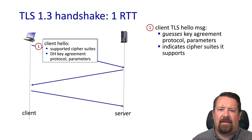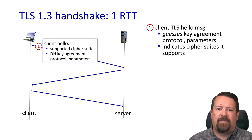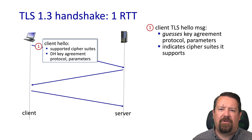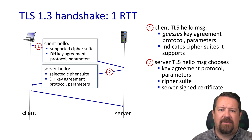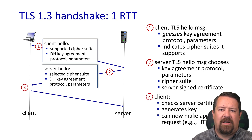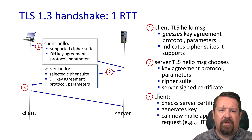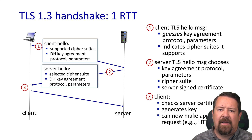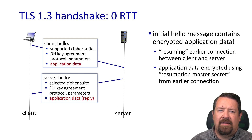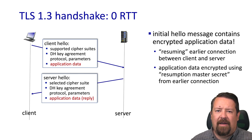In the TLS handshake, the client indicates in its packet which cipher suites it supports, as well as the parameters for the Diffie-Hellman key agreement. The server responds with a selected cipher suite from the available options, confirms the key agreement protocol parameters, and provides its signed certificate. The client then checks the server's certificate by decrypting it using the certificate authority's public key. As long as that checks out, it can generate the master secret key and begin making application requests. There's also the case of a zero round trip time handshake.